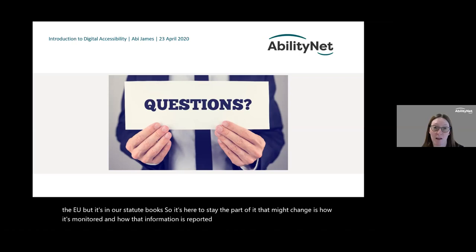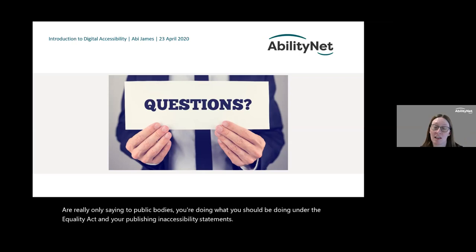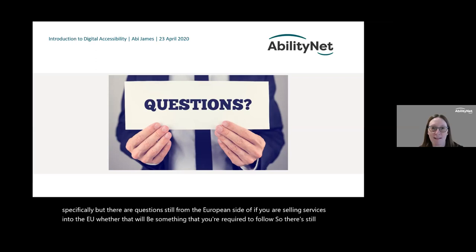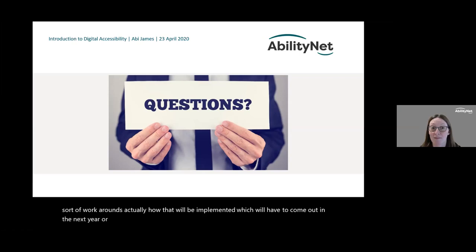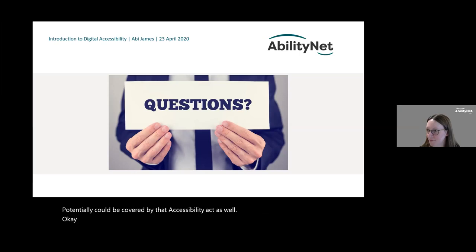From the government's perspective, those regulations are really just saying to public bodies: do what you should be doing under the Equality Act and publish an accessibility statement. Regarding the EU Accessibility Act, what we're hearing is that it won't come into UK law specifically, but there are still questions from the European side about whether, if you are selling services into the EU, you'll be required to follow it. There's still work to be done on how that will be implemented over the next year or two.